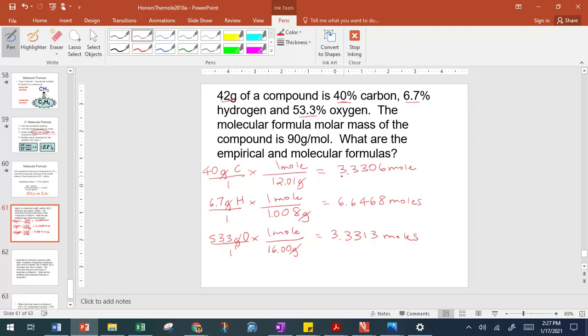So we see here the smallest one is that 3.3306, so we're going to divide each of these by that. So the first subscript will be 1. Second one will be 2. And the third one will be 1. So we get for our empirical formula C1H2O1.